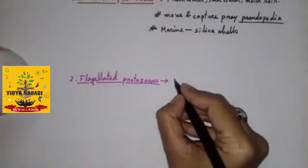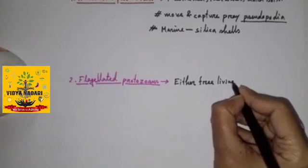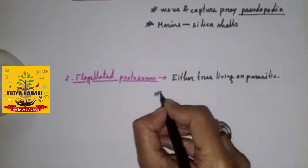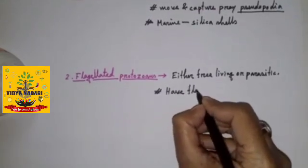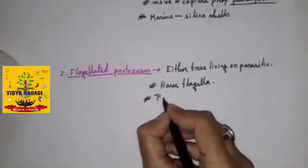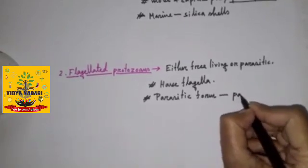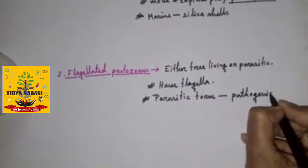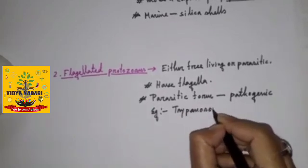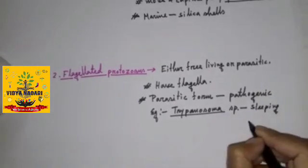Now the flagellated protozoans are either free living or parasitic. They also have flagella. The parasitic form is pathogenic. Example: Trypanosoma species which is responsible for sleeping sickness.